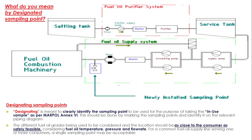The fuel sampling point can be placed after the circulating pump and before the combustion machinery. You can place it at any point within that range.